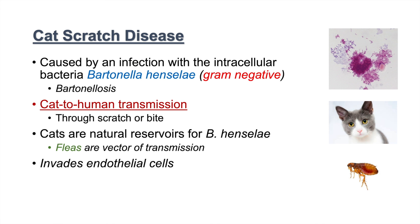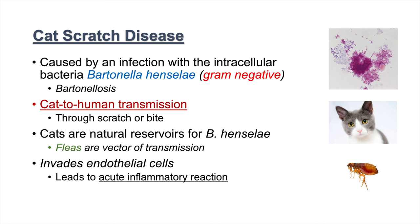When a human gets infected with Bartonella henselae through a cat scratch or bite, the bacteria will invade the endothelial cells. This leads to an acute inflammatory reaction and the activation of a pro-inflammatory cascade, which causes the symptoms we'll discuss next.